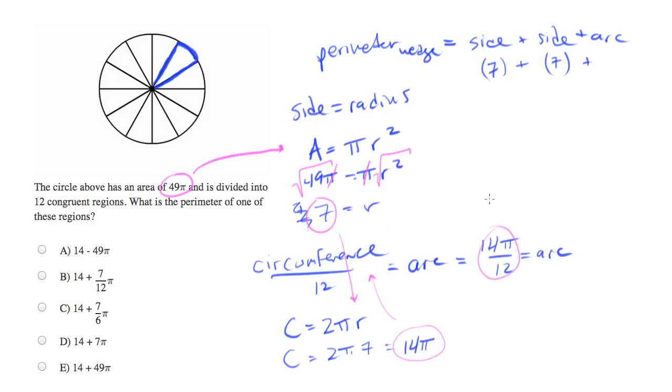Now we're going to take that and plug it in to the arc. So we'll get 14 pi over 12.